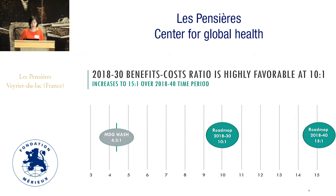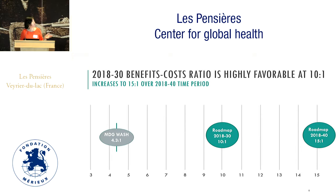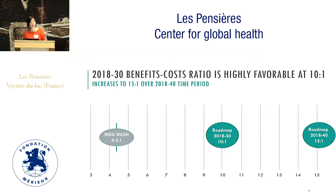You've already heard this number a few times — the benefits-to-cost ratio of 10 to 1. The roadmap from 2018 to 2030 is 10 to 1. If you extend it out to 2040, where you're actually able to realize all the benefits of WASH investments, that number increases to 15 to 1. For comparison, the MDG cost-benefit ratio was 4.3 to 1. This really highlights the value of the roadmap's multi-sectoral approach and the ability to target the most vulnerable hotspot populations.